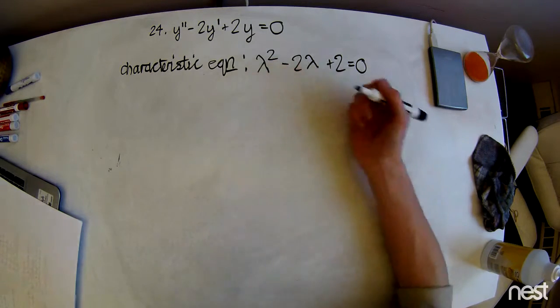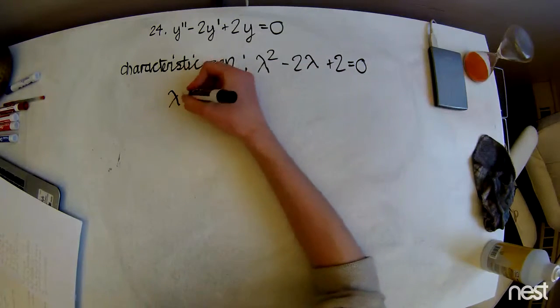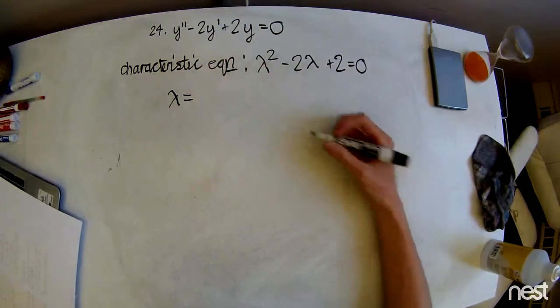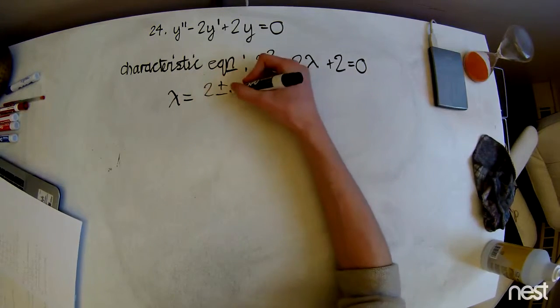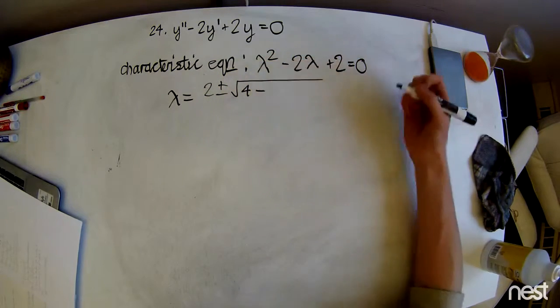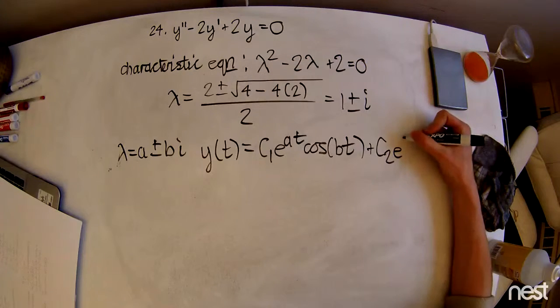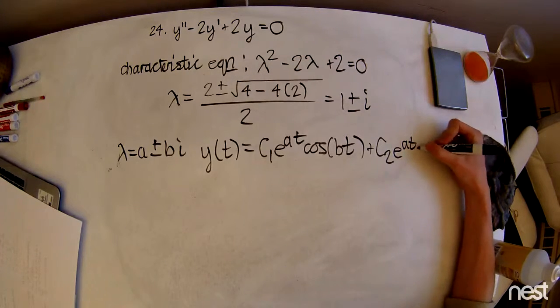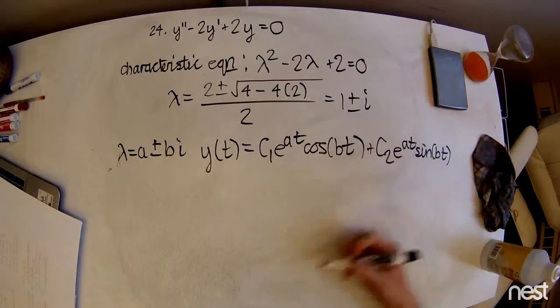So we're going to use the good old trusty quadratic formula that we all know and love, and that's going to give us two plus or minus square root of four minus four times two, all over two. So we get one plus or minus i.